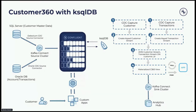As part of the Confluent platform, we have ksqlDB — a streaming engine that allows you to process data coming into the platform in real time. Alongside that, we have connectors that allow you to integrate with a variety of source and target systems. If you want to source information from, say, customer master data in SQL Server, or transactional information in an Oracle database, or CRM systems like Salesforce, the connector catalog is something you can use to bring all of that into the Confluent system.